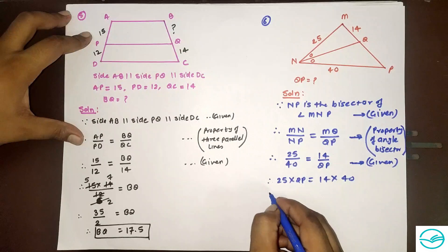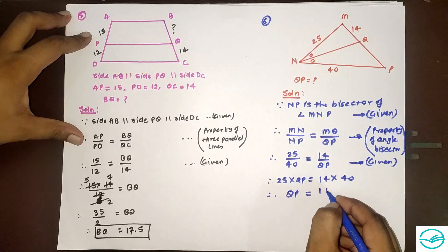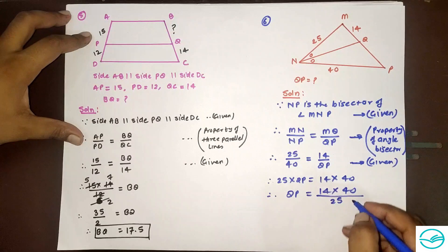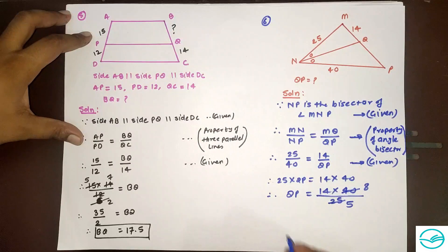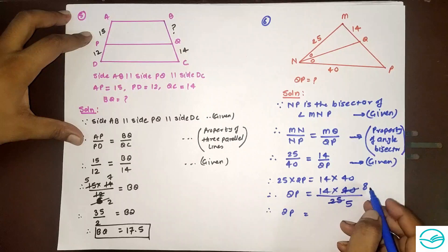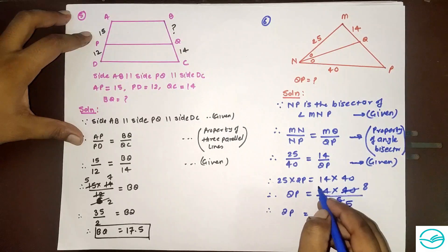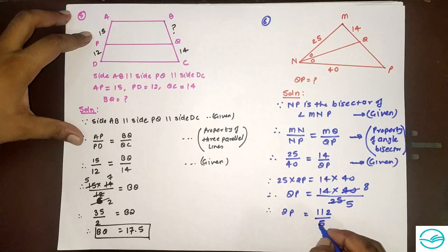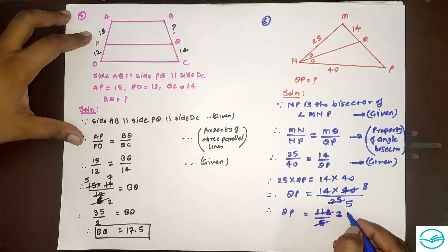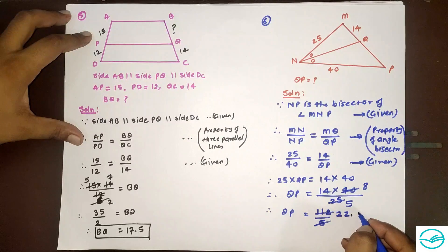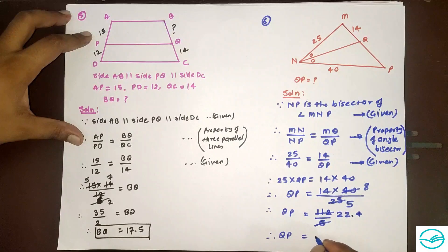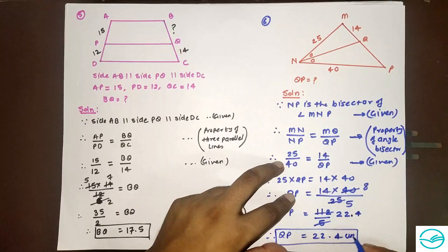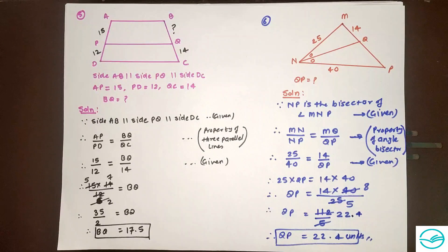QP equals 14 into 40 divided by 25. Simplifying by 5: 40 divided by 5 is 8, and 25 divided by 5 is 5. So QP equals 14 into 8 divided by 5, which is 112 divided by 5. Dividing: QP equals 22.4 units. That is our answer for question number 6.